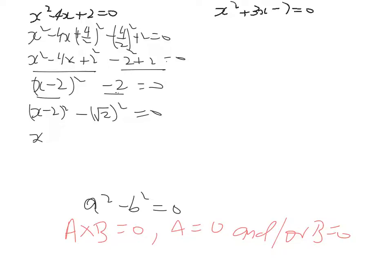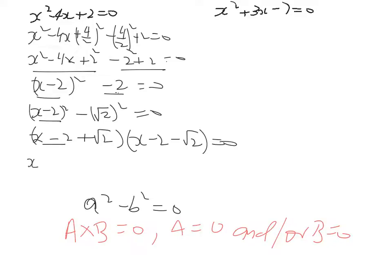Now we've got x minus 2 plus the square root of 2, and then x minus 2 — because that's our a term so that doesn't change — minus the square root of 2. That still equals 0. So because of that, we've got x equals 2 minus the square root of 2, and x equals 2 plus the square root of 2.